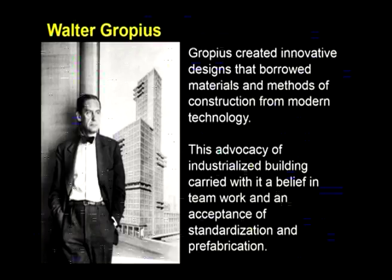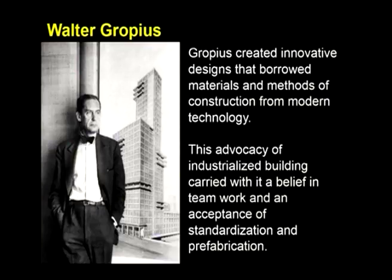Gropius did a lot of innovative designs. He borrowed materials and construction methods from modern technology, always in line with the latest technological developments. His advocacy of industrialized building carried with it a belief that teamwork is better than individual work, and he embraced standardization and prefabrication. He used technology as a basis for transforming a building into a science made of precise calculations, incorporating the latest technologies from the market into his buildings so that functions were performed exactly as intended — German engineering and architecture at its best.